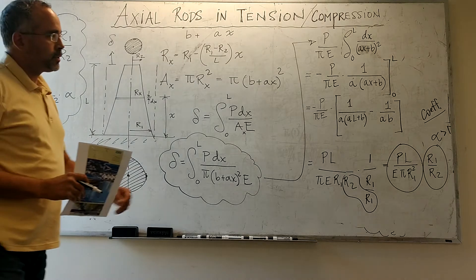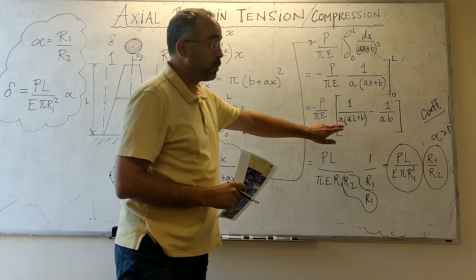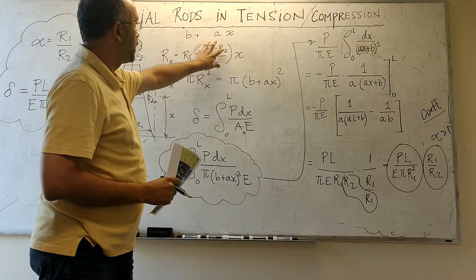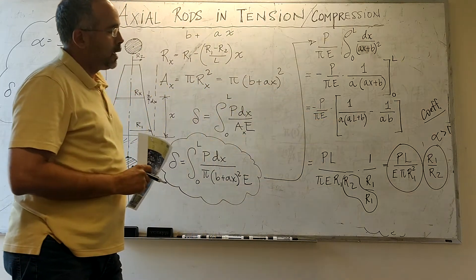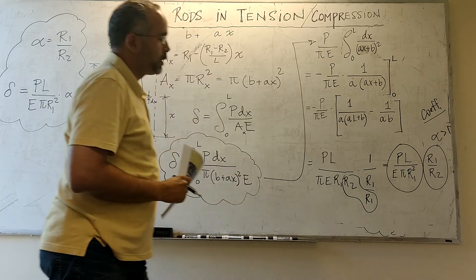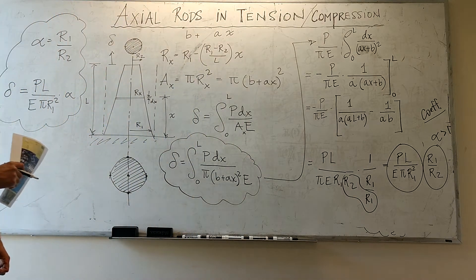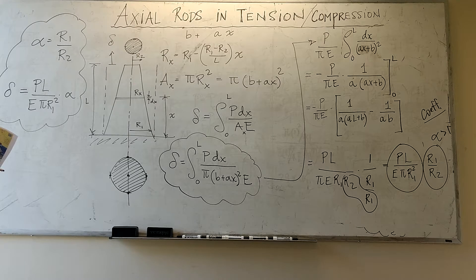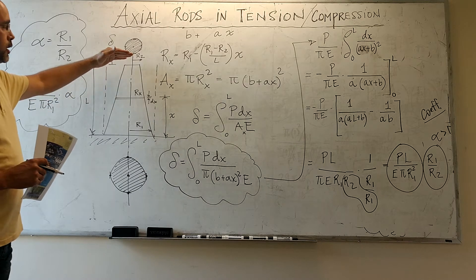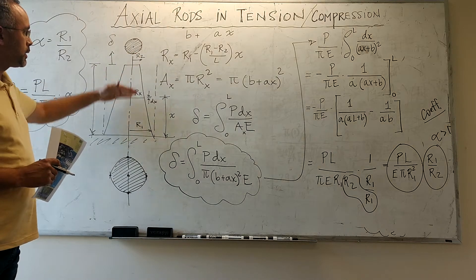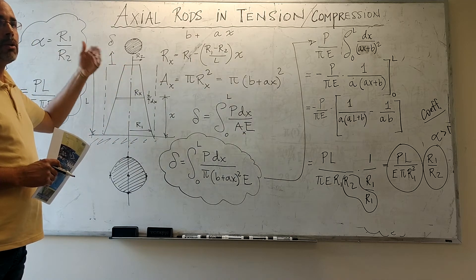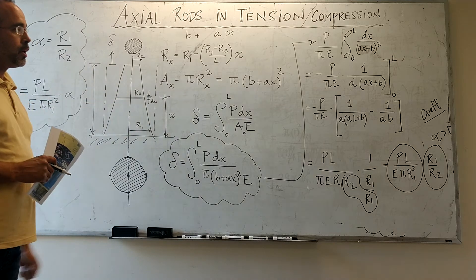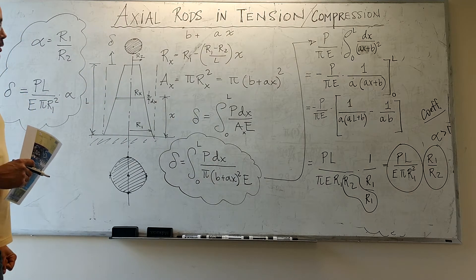I do suggest that you go through this algebra on your own — substitute a for this value and b for that, and don't forget the minus sign in a — and try to reach this expression for yourself, so that you can convince yourself that it actually boils down to that result. Also note that, as in previous problems, we have neglected the self-weight of the rod.